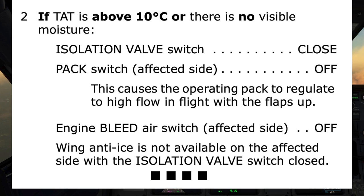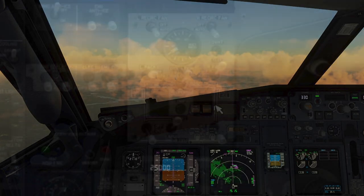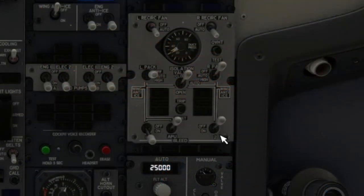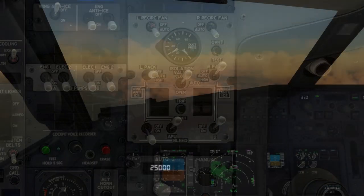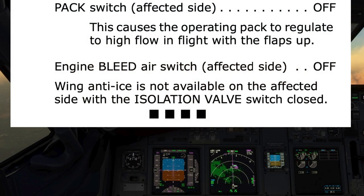Engine bleed air switch, affected side — so right side — to off. Note: wing anti-ice is not available on the affected side with the isolation valve switch closed. Wing anti-ice valve open checklist complete.